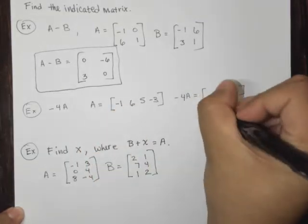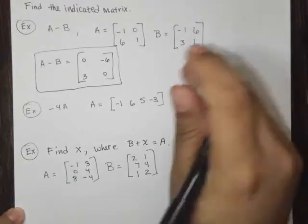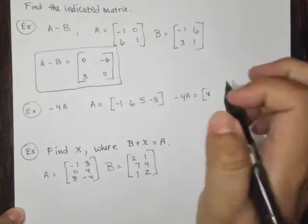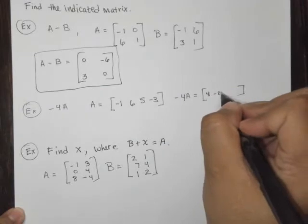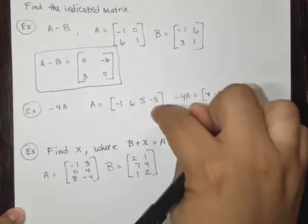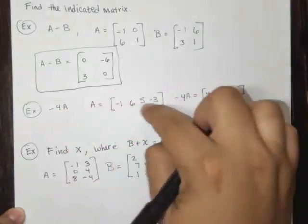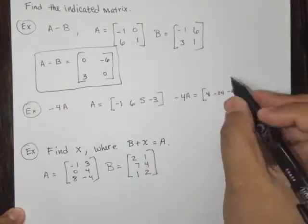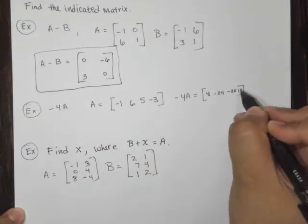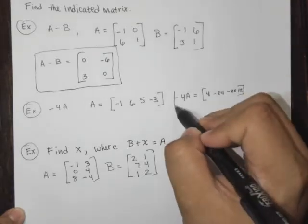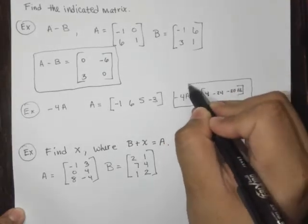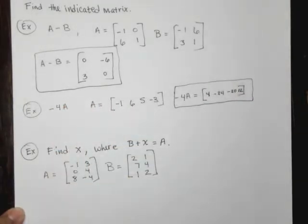So negative four times negative one is positive four. Negative four times six is negative 24. And then we have negative four times five, which is negative 20. And then negative four times negative three, which is positive 12. So that's what that looks like there. That is negative four A.